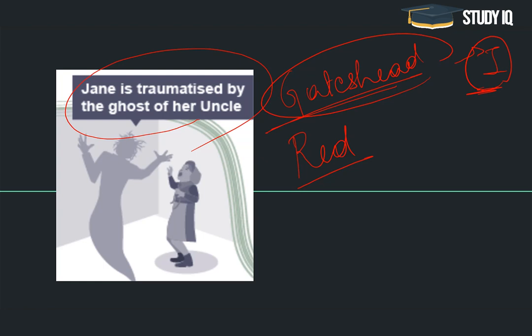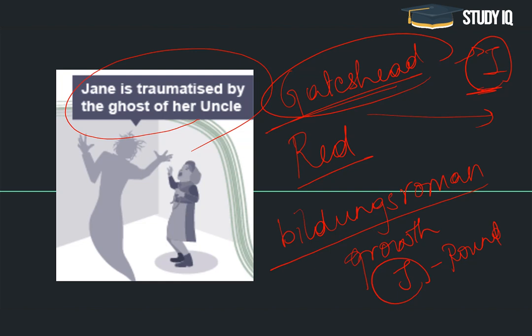یاد رکھنا ہے کہ Jane Eyre کی یہ کہانی ایک Bildungsroman ہے۔ Bildungsroman کا ارتھ ہوتا ہے it is a novel of growth of a character۔ اور growth کیسے ہو رہا ہے — Jane ایک round character ہے، مطلب ان کی personality میں changes آ رہے ہیں، وہ evolve کرتے جا رہے ہیں۔ وہ ایک flat یا stubborn character نہیں ہے۔ اور یہ Gateshead پہلا پڑھاؤ ہے Jane کی پوری life میں۔